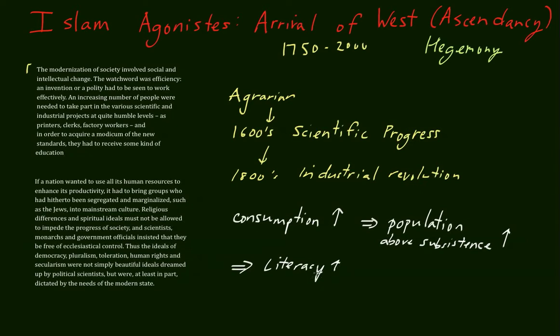As literacy went up, people began to demand a greater share in the decisions of the government. As Karen Armstrong wrote: 'If a nation wanted to use all its human resources to enhance its productivity, it had to bring groups who had hitherto been segregated and marginalized, such as the Jews, into the mainstream culture. Religious differences and spiritual ideals must not be allowed to impede the progress of society. Scientists, monarchs, and government officials insisted that they be free of ecclesiastical control. Thus, the ideals of democracy, pluralism, toleration, human rights, and secularism were not simply beautiful ideals dreamed up by political scientists, but were, at least in part, dictated by the needs of the modern state.'